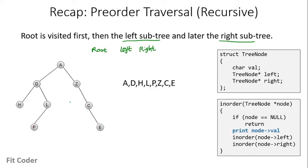So pre-order traversal of the given tree is this. I have already made a video explaining the pre-order traversal using the recursive method and also shown a shortcut way in which we can write down the pre-order traversal of any tree. I will link that video in the top right corner — you can refer to those if you have any doubts.